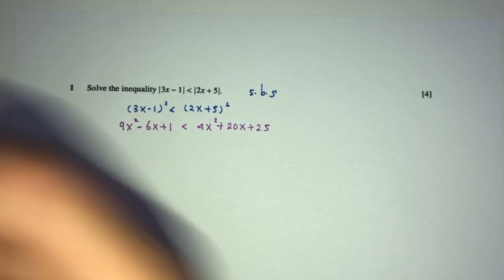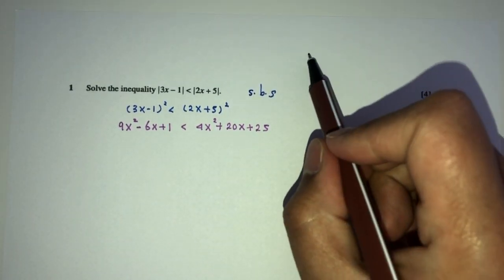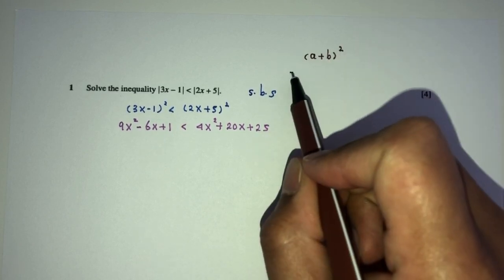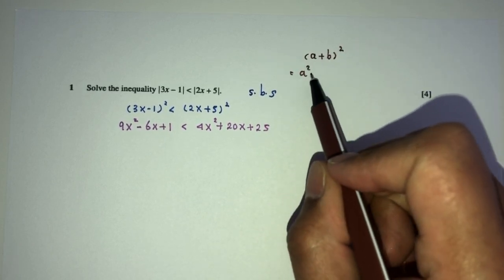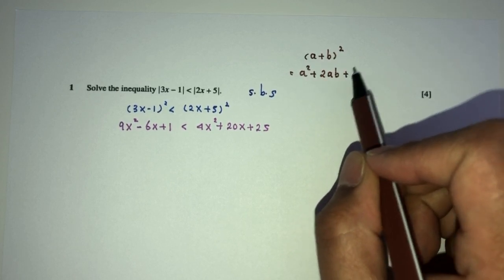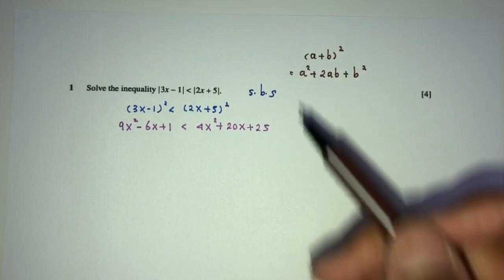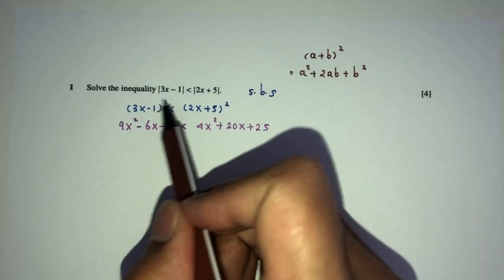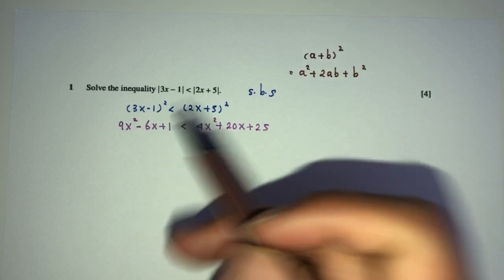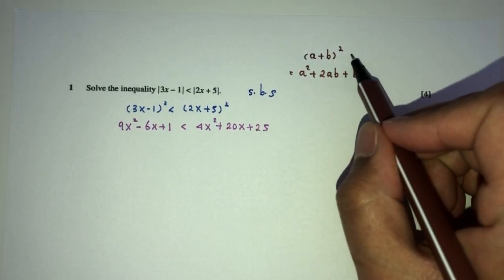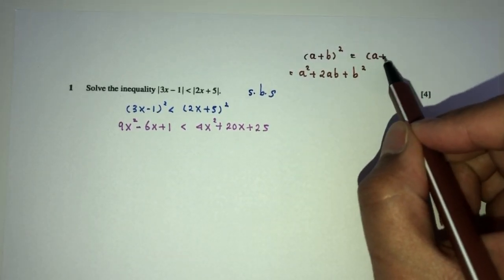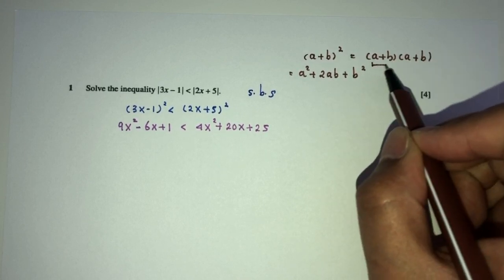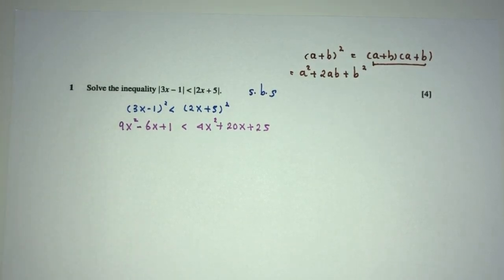Now, one question you may ask is how do you expand this. It is a formula: that will be a squared, square the first one, plus 2 times a times b, and then plus b squared. So first I square the first one, then plus 2 times a times b, then square the last one. Otherwise, you can always say this is the same thing as (a plus b) times (a plus b), and take your time to expand this one by one.